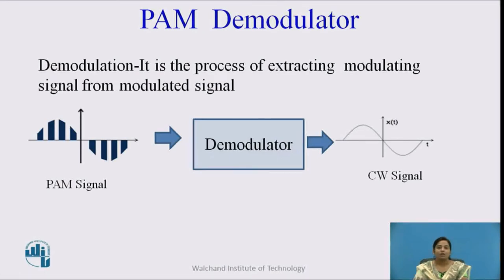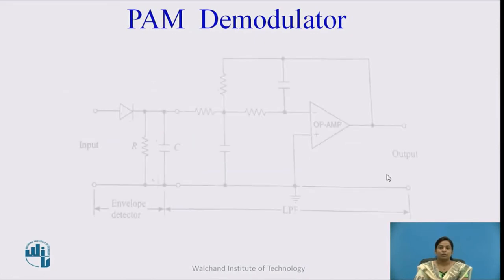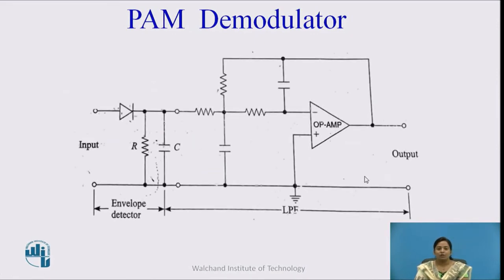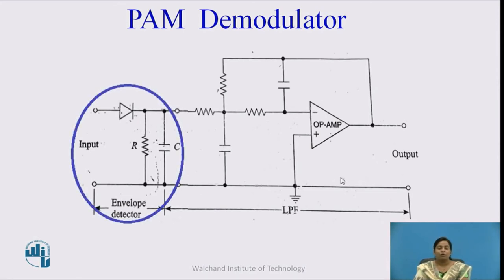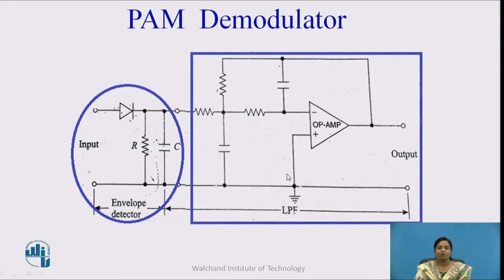Next, Pulse Amplitude Modulation demodulator. Demodulation is the process of extracting the modulating signal from a modulated signal. In the PAM demodulator, the PAM signal is given as input, and across the output we get a continuous wave signal — the original signal. This is the circuit for PAM demodulator, which consists of an envelope detector followed by a low-pass filter circuit. These are the two basic circuits: the envelope detector and the low-pass filter.